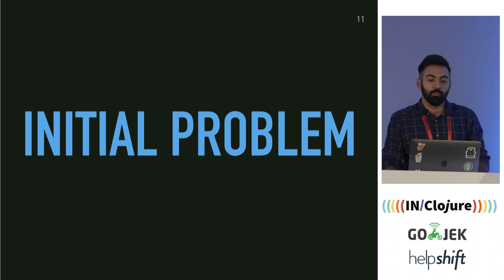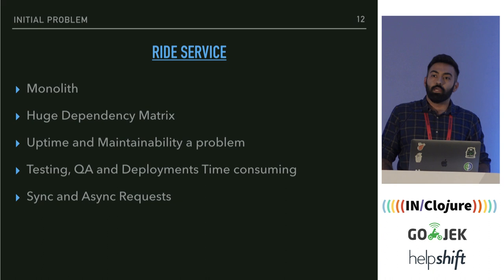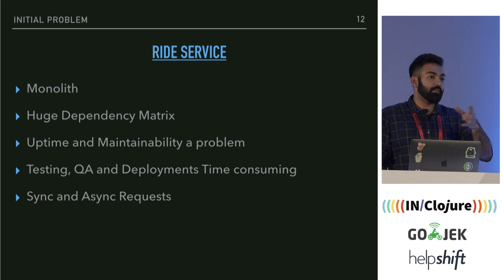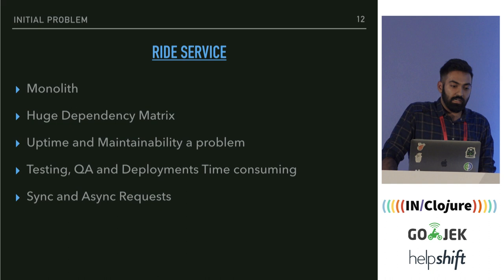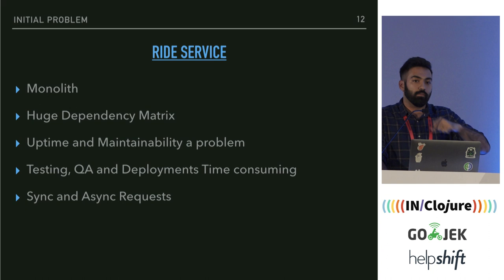Now that we know what Ziggurat does and what it's capable of, let's understand why we built it in the first place. At Gojek, we have a service called Ride Service — the backend for the ride-hailing part of Gojek, the Uber counterpart. It has become a monolith over the years with a huge dependency matrix. For every major flow of the application, there were around 30 dependencies being called.